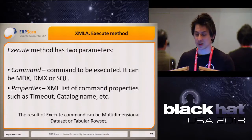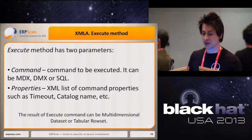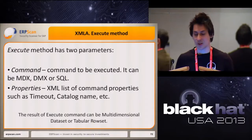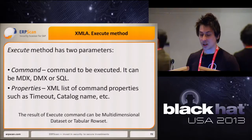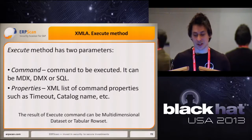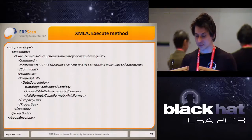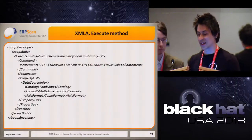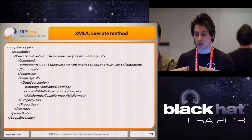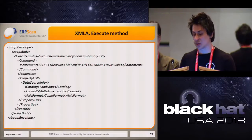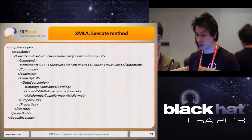The Execute method is more interesting. It has two parameters: a Command — to specify the MDX command to send to the server — and Properties — to specify properties like directory names, timeouts, and others. The slide shows an example of a SOAP Execute request containing a query for measures present in the cube.